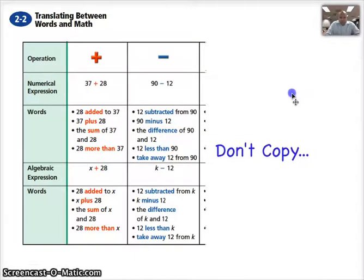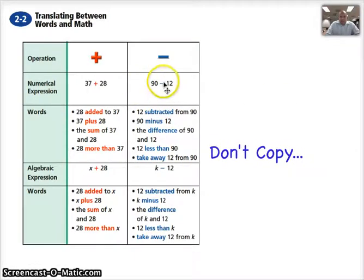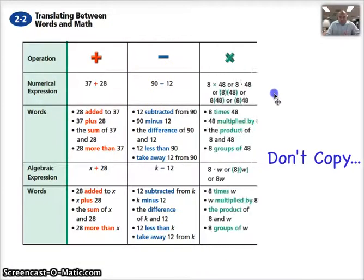Essentially the words added, plus, sum, more than are also included down here. We can say 28 added to x, x plus 28, the sum of x and 28, or 28 more than x. So there's different ways. Subtraction. How can we translate 90 minus 12? Well, I just said one way, 90 minus 12, or k minus 12, but there are other ways. 12 subtracted from 90, the difference of 90 and 12, 12 less than 90, or take away 12 from 90. So there's different ways in which we can interpret this.